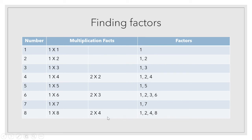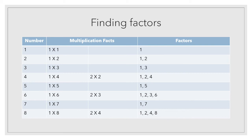Children, please note that the numbers two, three, five, and seven have only two factors: one and the number itself. Now nine — nine comes in the table of one and three. One nines are nine, and three threes are nine. So the factors of nine are one, three, and nine.